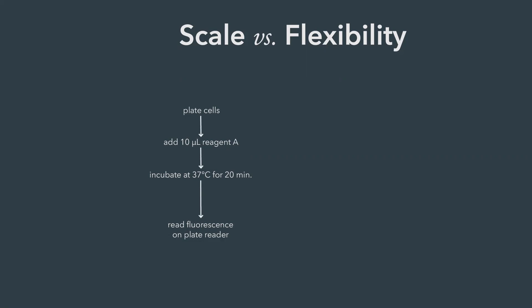Let's take a look at this pretty simple workflow. You add some cells to a plate, you add 10 microliters of some reagent, incubate the plate at 37 degrees Celsius for 20 minutes, and then read out fluorescence on a plate reader. So if this workflow is never going to change, then great — build a work cell, make the robots go through the motions, and you're done. For more fleshed-out, mature assays, that's mostly how things go.